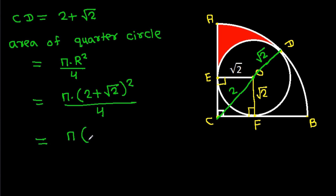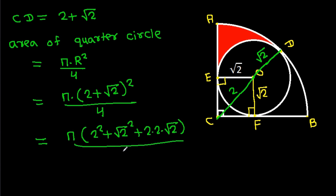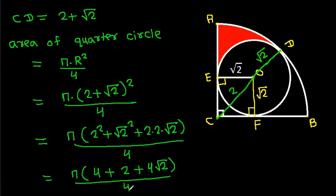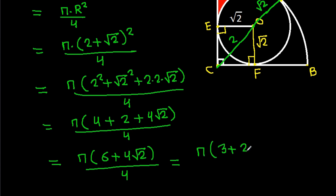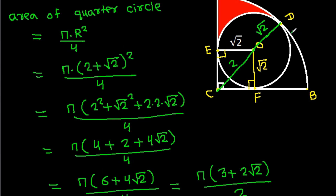The area of the quarter circle will be equal to π × radius² / 4. That is π × (2 + √2)² / 4. Expanding: 2² + (√2)² + 2×2×√2 = 4 + 2 + 4√2 = 6 + 4√2. So the area is π(6 + 4√2)/4, which simplifies to π(3 + 2√2)/2.